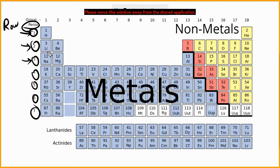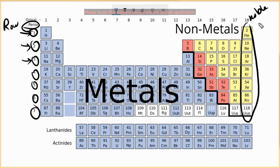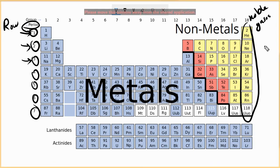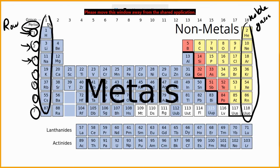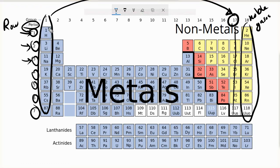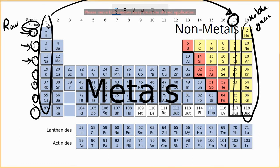Elements in the same group are very close to each other in their properties. For example, the last column contains the noble gases — they are all gases and do not react with other elements. Group 1 elements are also very similar to each other, and they always react with group 17 elements. All elements within a group share very close properties.